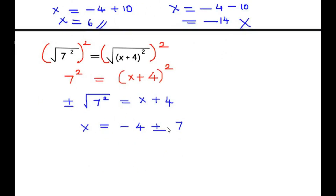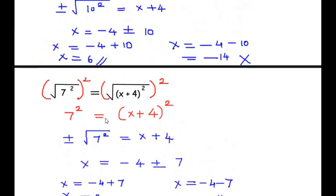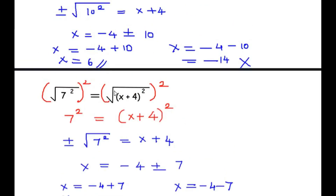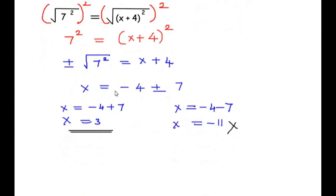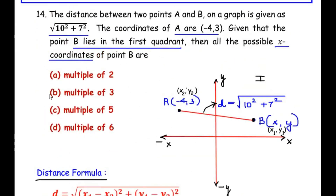So we get two values: X = -4 + 7 = 3, or X = -4 - 7 = -11. Again, we discard the negative value since B is in the first quadrant where X is positive. So X = 3. We now have two possible X values: X = 3 and X = 6. Both 3 and 6 are multiples of 3, so the X coordinates of point B are multiples of 3.